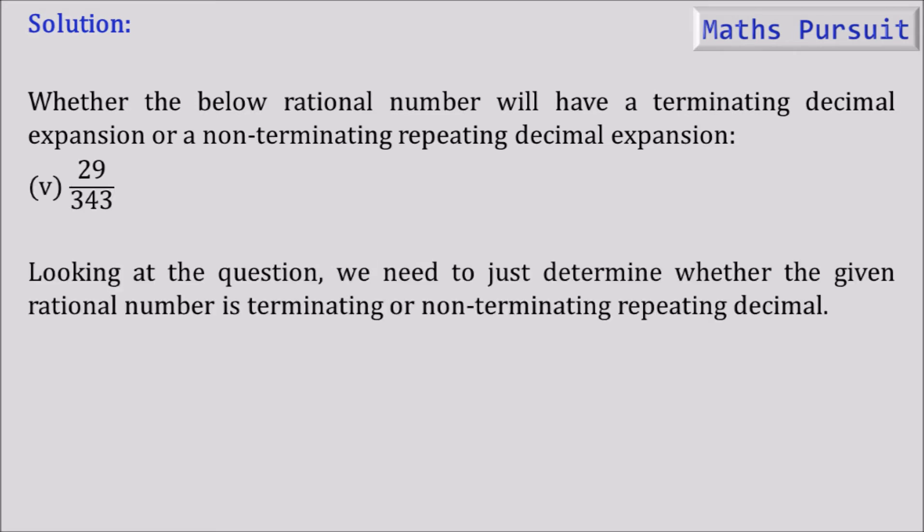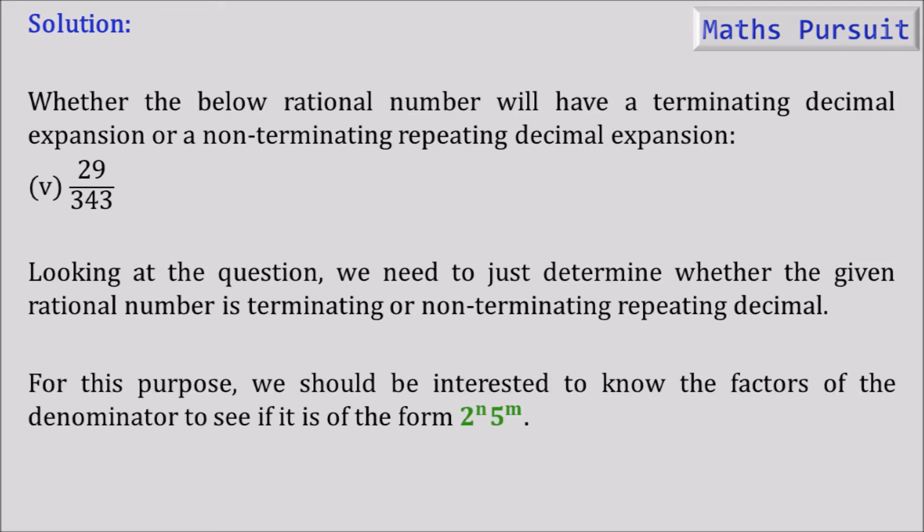Looking at the question, we need to determine whether the given rational number is terminating or non-terminating repeating decimal. For this purpose, we should be interested to know whether the factors of the denominator are of the form 2^n × 5^m or not.